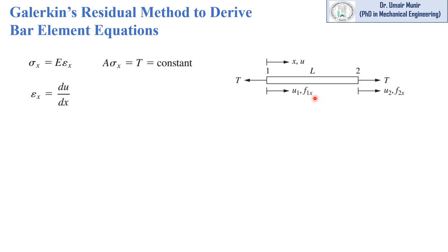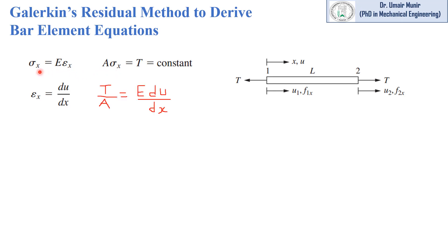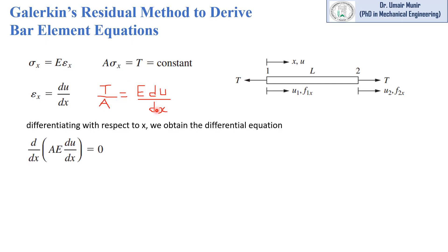We have this bar element which is under tensile forces and it has two nodes, one and two. According to Hooke's law, sigma_x is equal to E times epsilon, and strain is equal to change in length divided by the original length. Here, delta_u is change in displacement and delta_x is the original length. We know that the force acting on this bar is constant, which is equal to stress times area. So this Hooke's law can be written in the form where stress is replaced by force divided by area and epsilon is replaced by delta_u over delta_x. Differentiating this expression with respect to x, we obtain the differential equation.